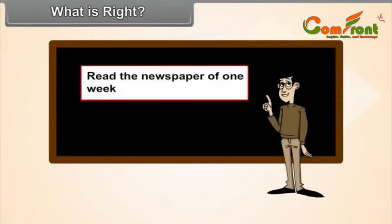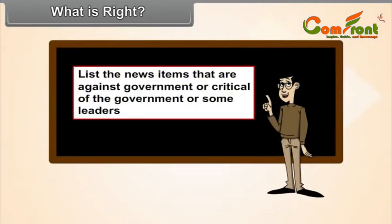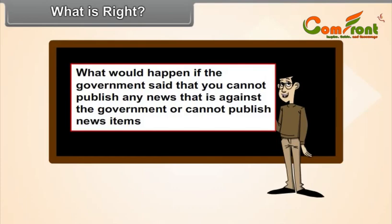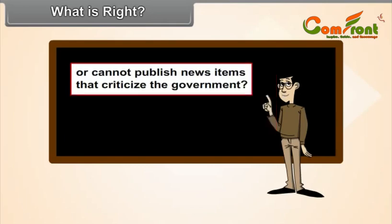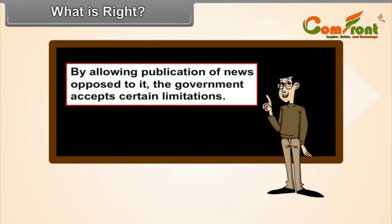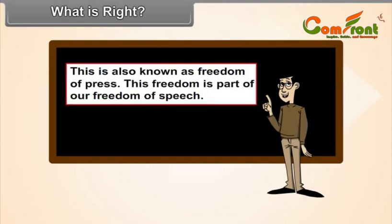Read newspapers of one week. List the news items that are against the government or critical of the government or some leaders. What would happen if the government said that you cannot publish any news that is against or critical of the government? By allowing publication of news opposed to it, the government accepts certain limitations. This is known as freedom of the press, which is part of freedom of speech.